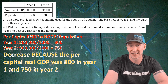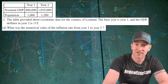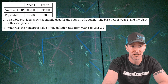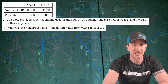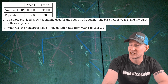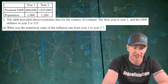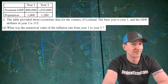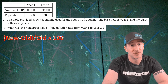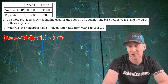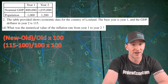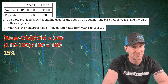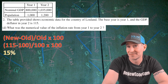If you answered something like that, you get your next point. For part D, we are asked what the inflation rate is between year one and year two based on the information we have. We can find that using the GDP deflators. For the base year, the GDP deflator is always 100, and we are given 115 for the year two GDP deflator. The formula is: new minus old, divided by old, times 100. Plugging in: 115 minus 100, divided by 100, times 100 gives us 15%. If you state 15%, you get your next point.